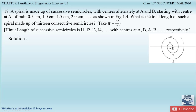For the first semicircle, this is L1 with center A. The second semicircle is L2 with center B. The third semicircle is L3 with center A. The fourth semicircle — the larger one — is L4 with center B. So the center alternates between A and B. The radius of the first semicircle is 0.5 cm, the second is 1.0 cm, the third is 1.5 cm, and the fourth is 2.0 cm, as shown in the figure.